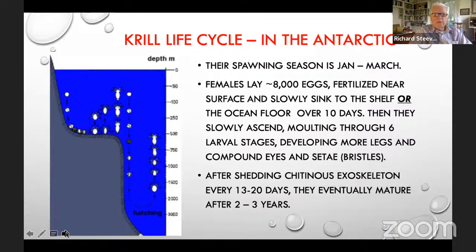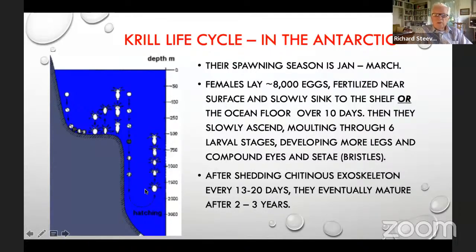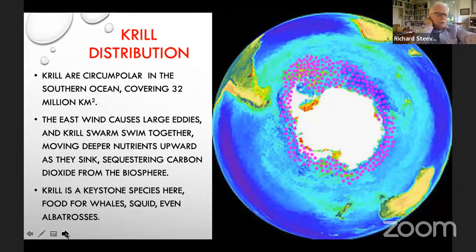Krill have an interesting life cycle. They spawn in January to March — summer in the Antarctic. Females lay about 8,000 eggs fertilized near the surface, which slowly sink to the shelf of the land below, or if offshore may fall to great depths. Eventually they hatch, and as they molt through various larval stages — developing more legs and compound eyes — they shed their chitinous exoskeleton every two to three weeks and mature over two to three years. Here is their distribution in the Southern Ocean, with the tip of South America on the left and next to it the Antarctic Peninsula, where most studies have been done.